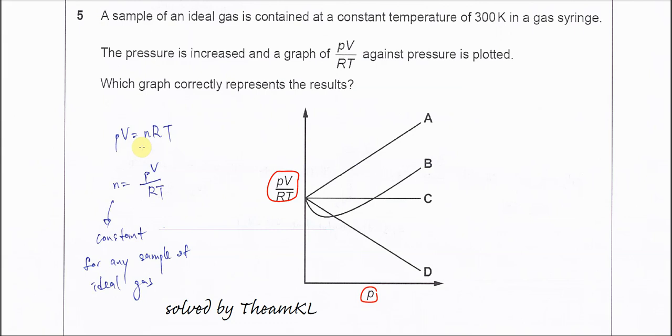PV equals nRT. We try to rearrange the parameters, so we move the RT to the other side to make it PV over RT. So PV over RT is equal to n, which is the number of moles.